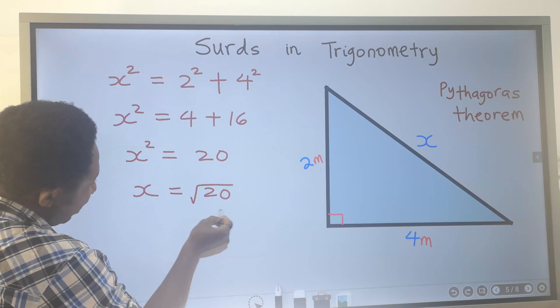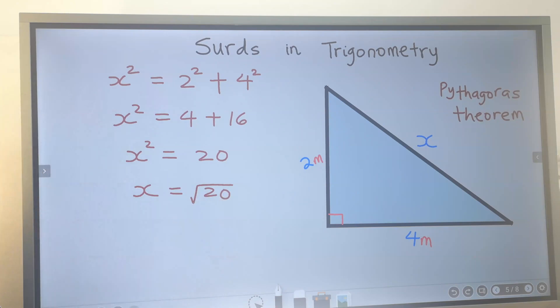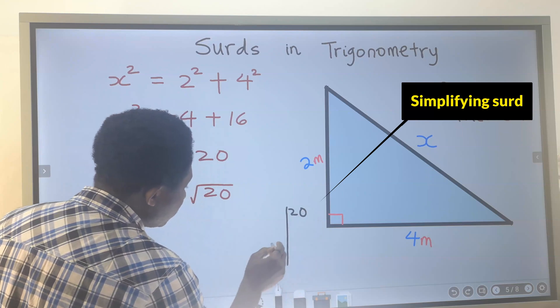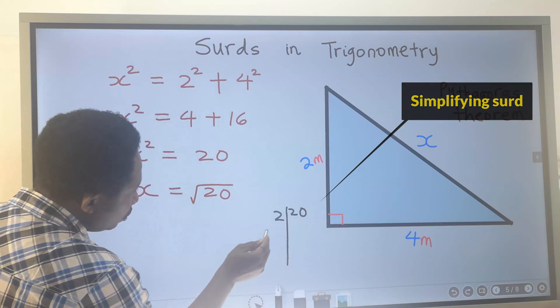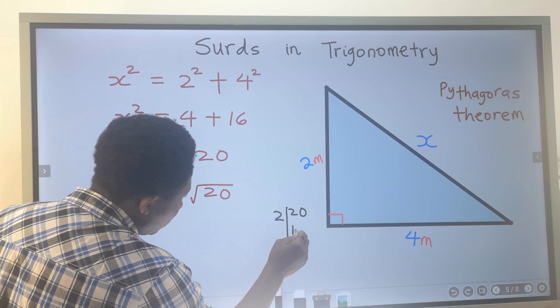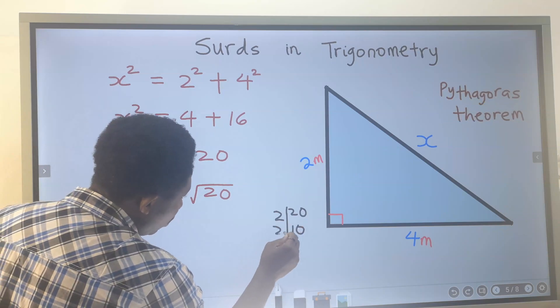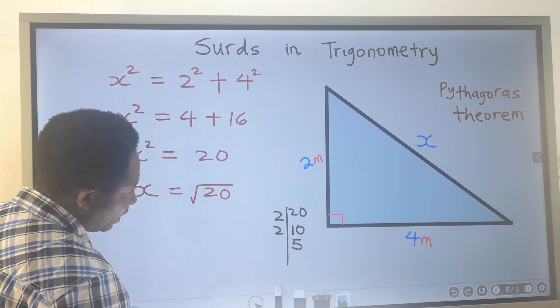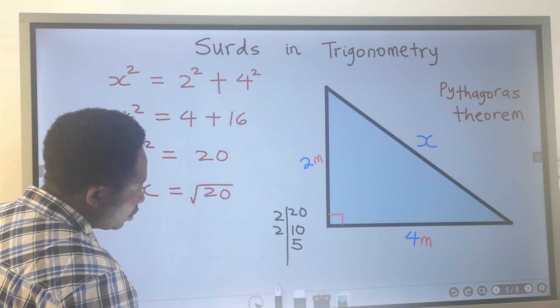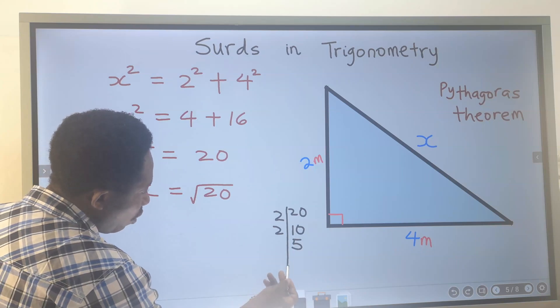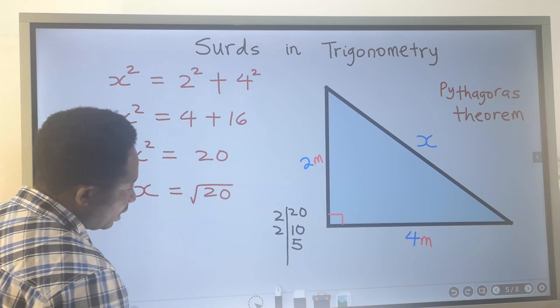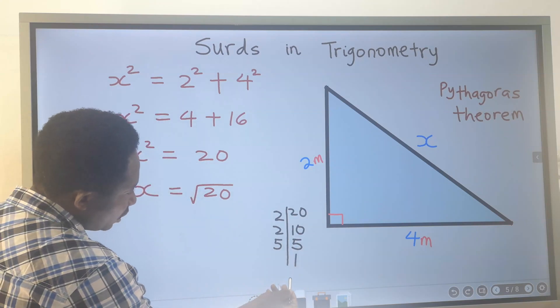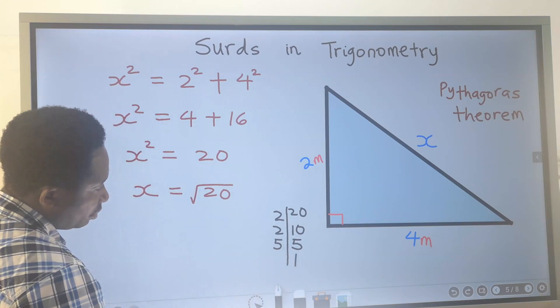Next, what are the factors of 20? Here, we are going to draw a line and write 20. We will start with 2. 2 into 20 is 10. 2 can go into 10, 5. 2 cannot go into 5 without a remainder. 3 cannot go without a remainder. 4 cannot go without a remainder. But 5 can go into 5, 1. Once we get 1, we stop.